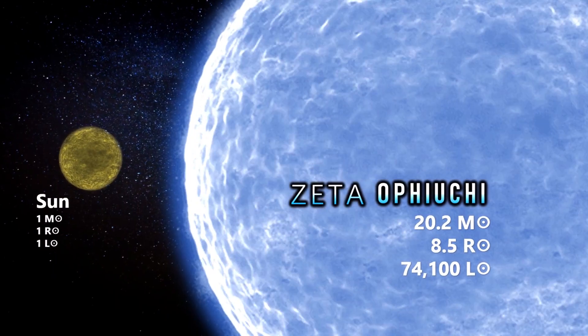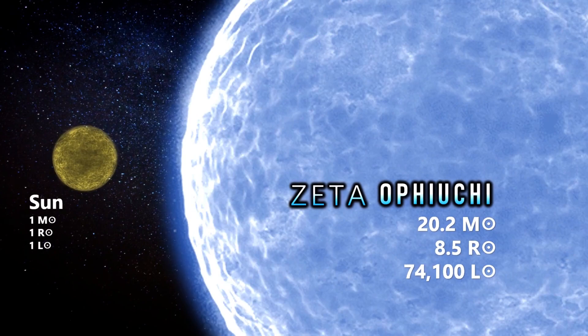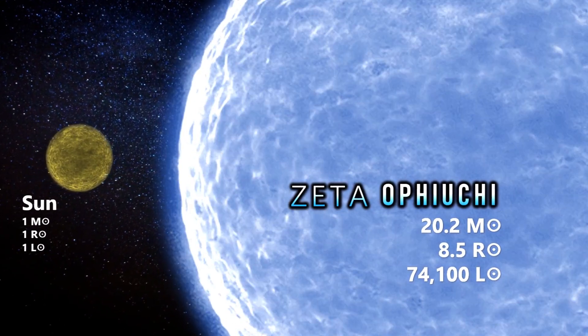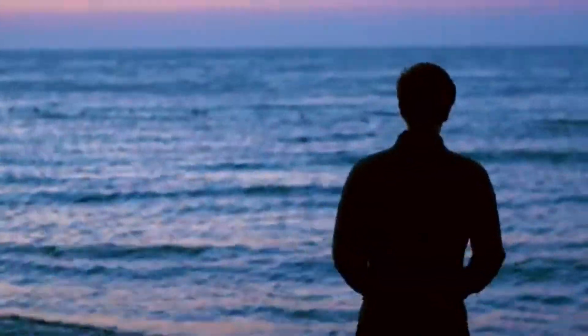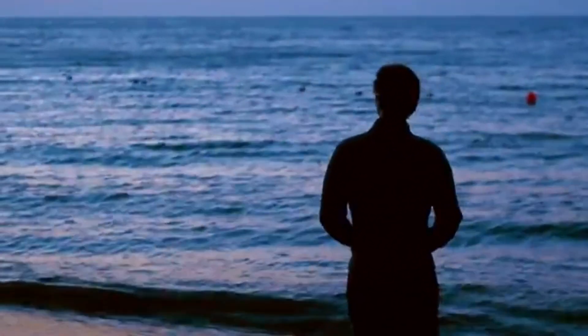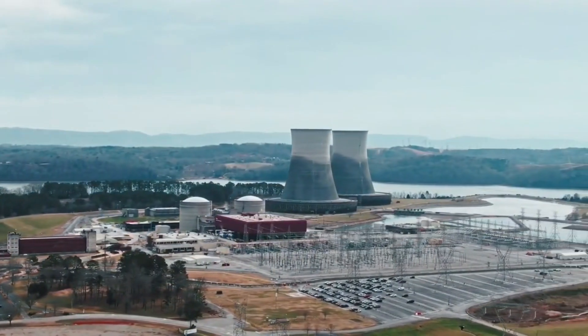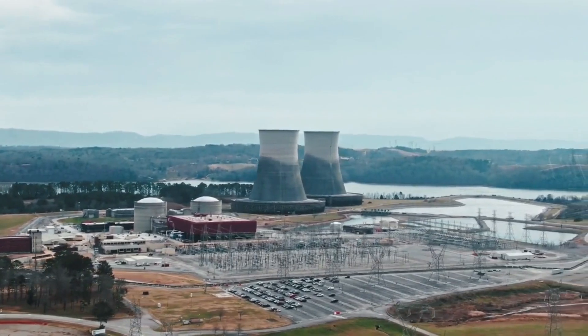The star of Zeta Ophiuchy is over 19 times more massive than our sun, and a luminosity of an incredible 74,000 times brighter. So, you might reasonably ask yourself the question of how could such a gargantuan powerhouse of a star, located a mere 458 light years away, be so faint?